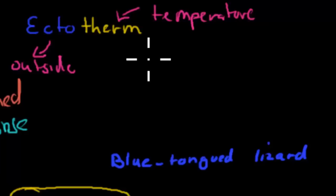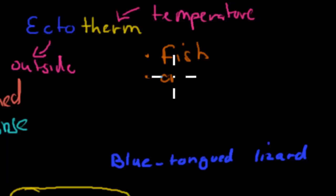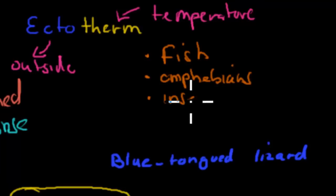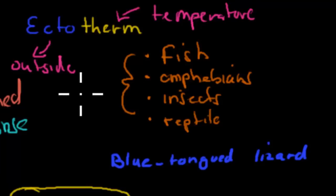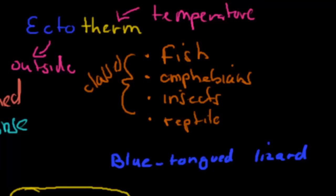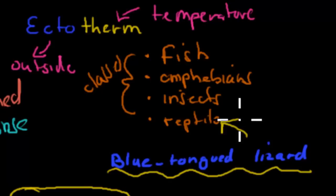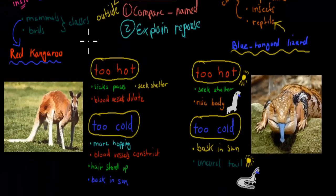The classes that are ectotherms — not the named species, but the classes — include fish, amphibians such as frogs, insects, and reptiles. These are sometimes called cold-blooded in older terminology. Our named ectotherm in this video is the blue-tongued lizard, which is a reptile. So now we have our named ectotherm and endotherm: the red kangaroo and the blue-tongued lizard.